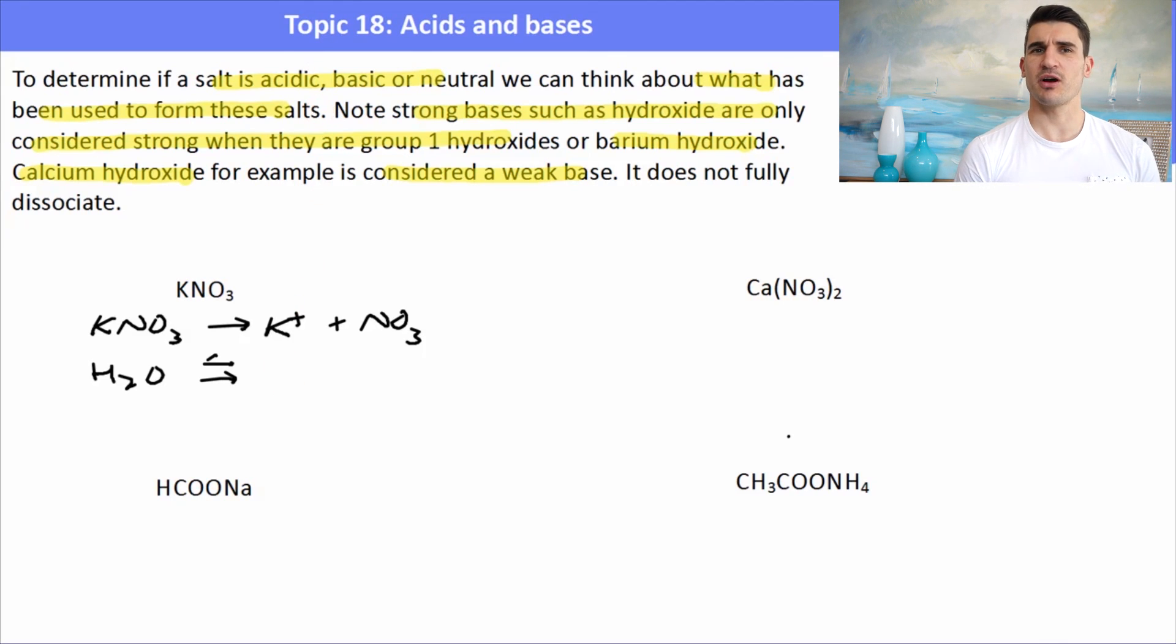You can see just by writing them in a smart way that KOH, well that's a strong base, and HNO3 that's a strong acid. So we've got a strong acid and a strong base that have been used to form KNO3, so that will be a neutral salt.